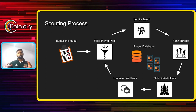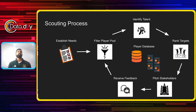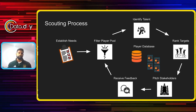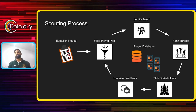Once we have that established, we get into our scouting cycle. The first thing is filtering the player pool — we have 20, 30, 40,000 professional soccer players in the world, and we want to narrow that down as much as possible to target our selections. Then we identify talent from a ton of different sources: agents and clubs sending us players, ground scouts in other countries identifying players through youth tournaments, video scouts watching games, and on the data side, filtering through all the players that meet our checklist of needs to find the best fit.